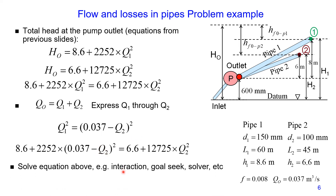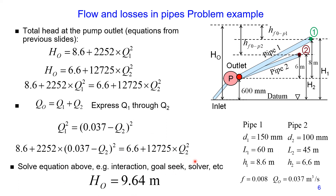To solve this equation we can use different methods — for example manual iteration, the Goal Seek function in Excel, or the Solver function in Excel. Iterating over the flow rate through pipe number two, we obtain the total head at the outlet equal to 9.64 meters. I hope this is helpful. If you have any questions, please write them in the comments section. Goodbye!